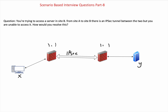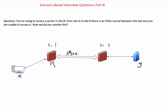So let's start with the basics. First of all, you'll check physical connectivity between these two sites to check if that is intact. Then you'll basically check if the tunnel is made between the two firewalls, F1 and F2, and if that is in order or not.